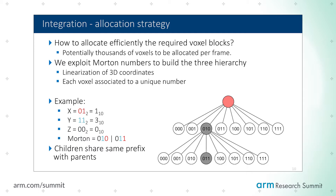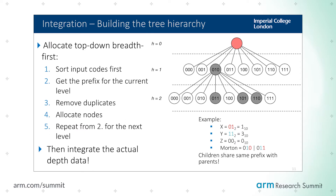Why is this interesting and crucial? Morton numbers have an interesting property: the prefix of this number identifies the parent in the tree. All children of a node share the same prefix with the parent node. We exploit this property to do allocation very efficiently. Our algorithm first sorts all the codes that need to be allocated, gets a prefix for the level of the tree being allocated, removes duplicates generated because parents share different children, and allocates those nodes entirely in parallel. Once you start from the root and go down level by level, you're always sure the previous levels have been allocated, so you can do allocation fully in parallel. The only synchronization needed is a barrier at each level of the tree.